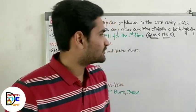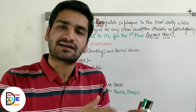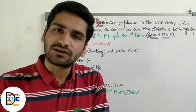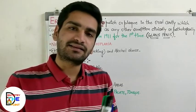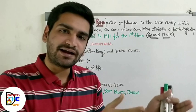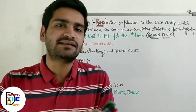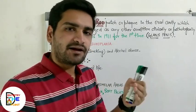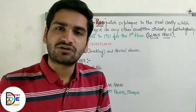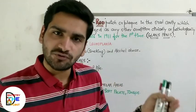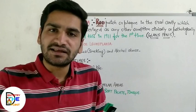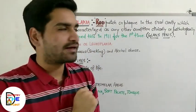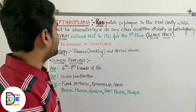In the same way, erythroplakia is a red velvety patch or plaque which cannot be classified clinically or pathologically as any other condition. Just as there were many disorders having white patches in the oral cavity, similarly there are many disorders in the oral cavity which present as red patches, like inflammatory disorders, denture stomatitis, or lesions of tuberculosis. If none of those conditions apply, then we classify it clinically or pathologically as erythroplakia — it is a red patch or plaque.